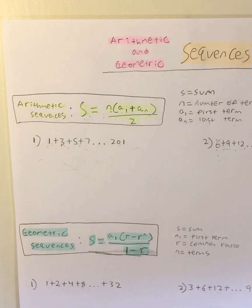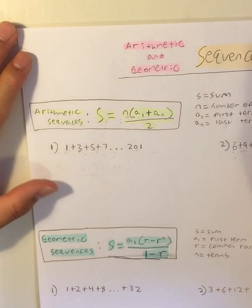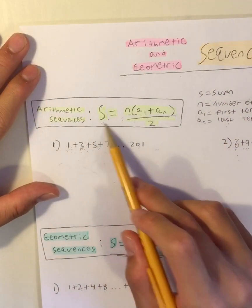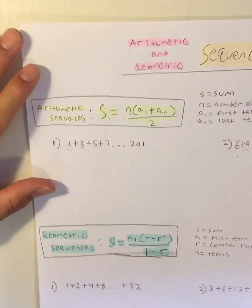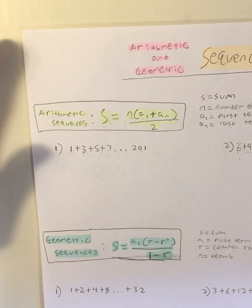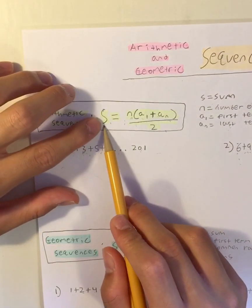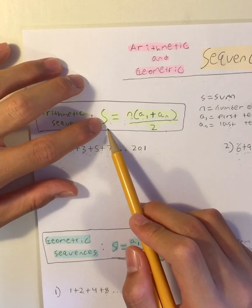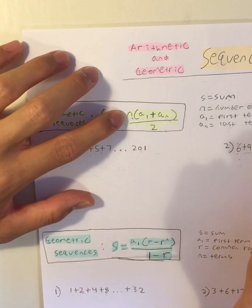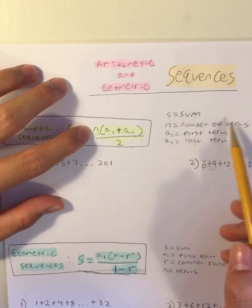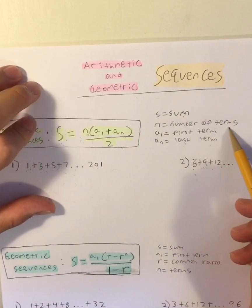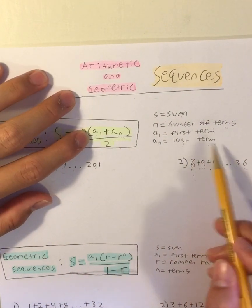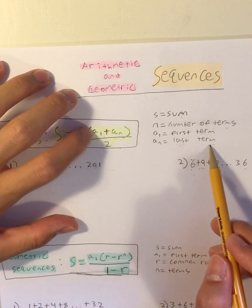So let's begin on the first example. How do we add arithmetic sequences? What does this equation even mean? So S represents the sum of the arithmetic sequence. N is the number of terms. A1 is the first term, and AN is the last term.